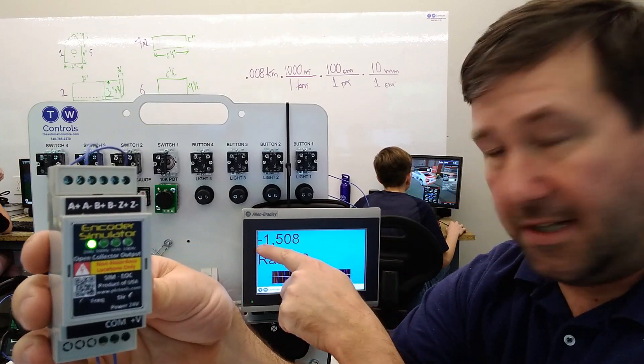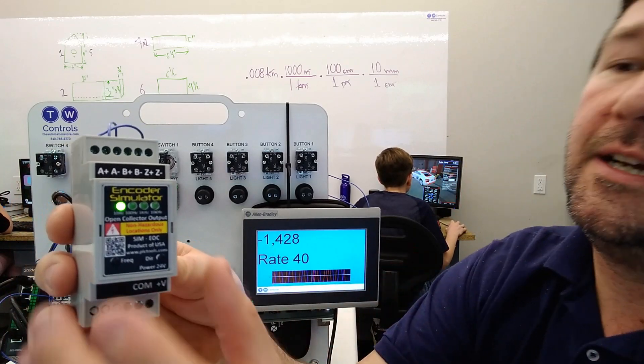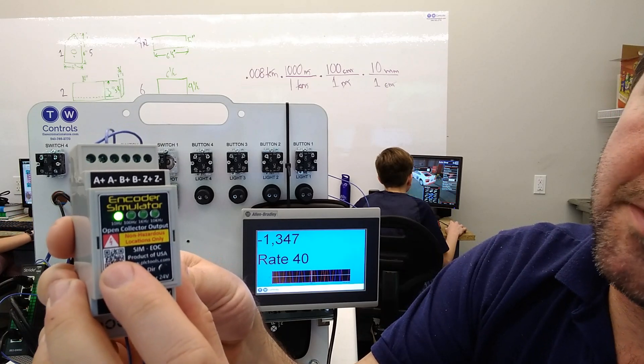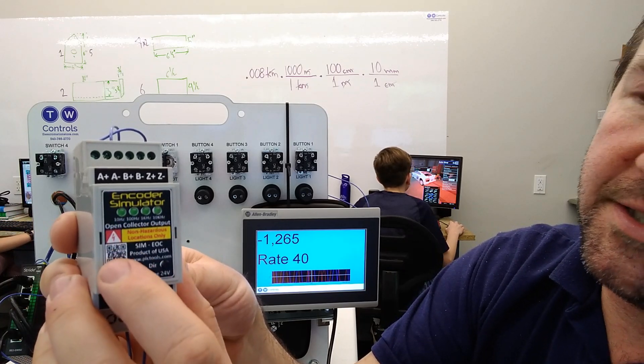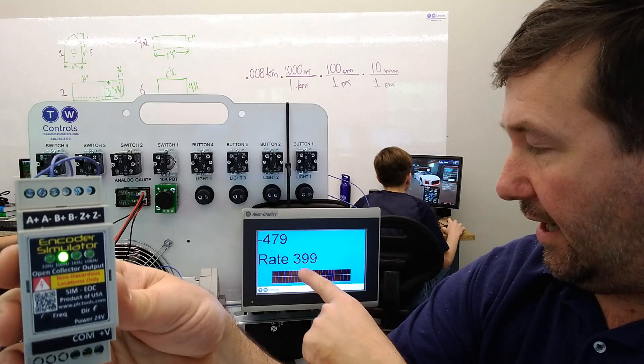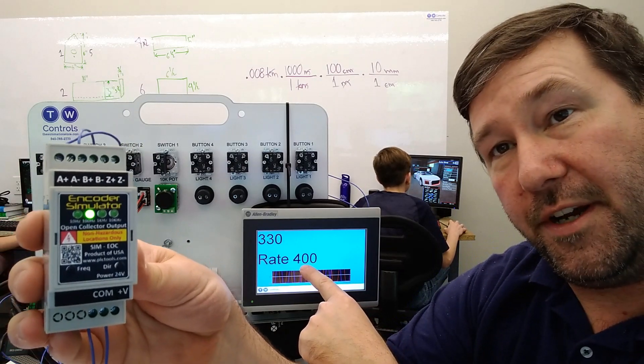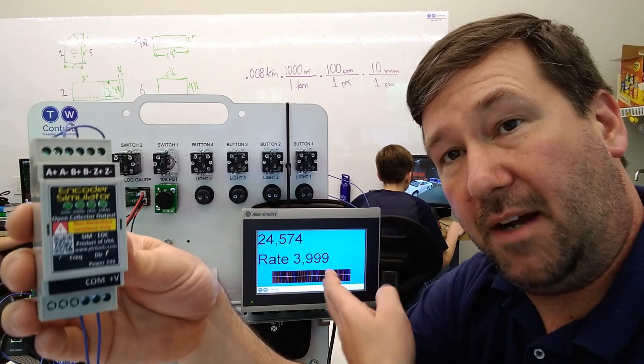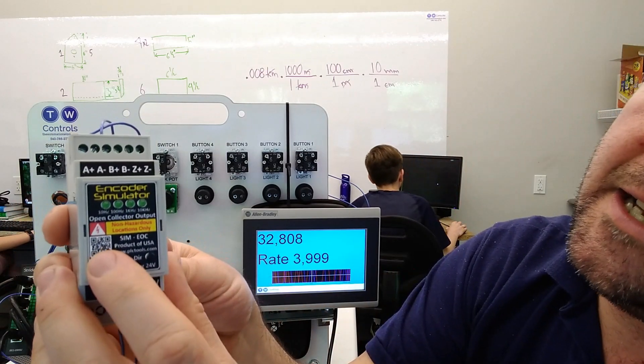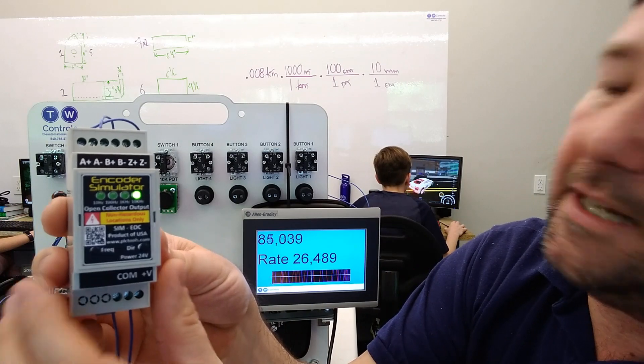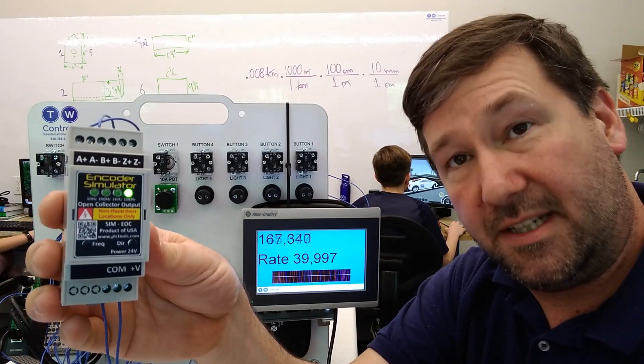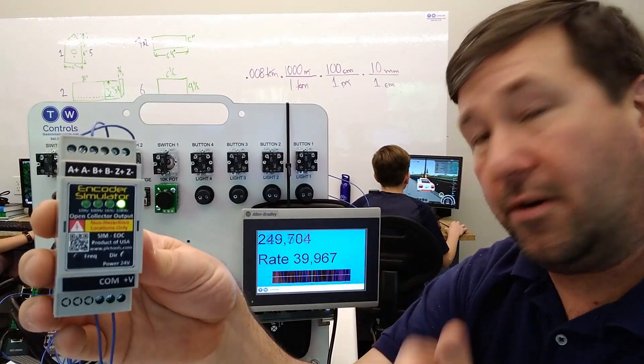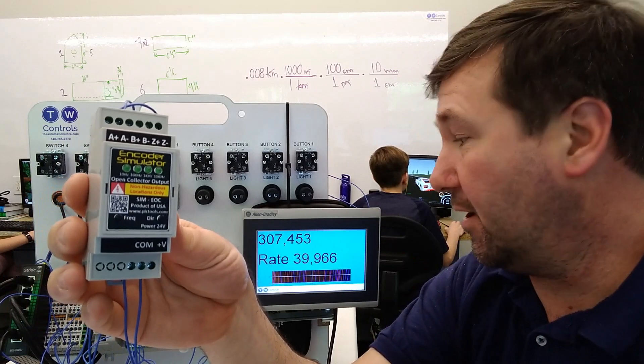Then we can press the frequency button and it'll switch it to 100 hertz. And now we're showing 400 over here. We press it again. It's going to go to a thousand hertz, which is shown by 4,000. And finally we press it again and we're going to be going the max speed of 10 kilohertz or 40,000 pulses over here.